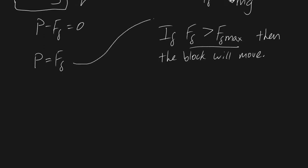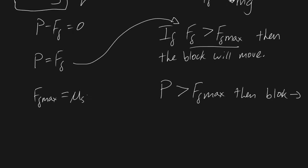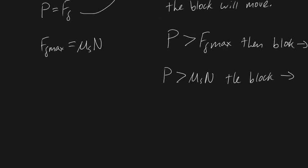Okay, well let's consider that. So if ff is greater than ff max, then it will move. So let's just sub ff into this equation right here. So basically we can write if P is greater than ff max, then the block will move to the right. Okay, well what's the maximum friction force? We determined in the last video that experimentally, the maximum friction force any object can have is equal to your static coefficient of friction times by the normal force, right? So basically we can now write that P must be greater than μs times N in order for the block to move to the right. If it's not the case, then the block isn't moving to the right.